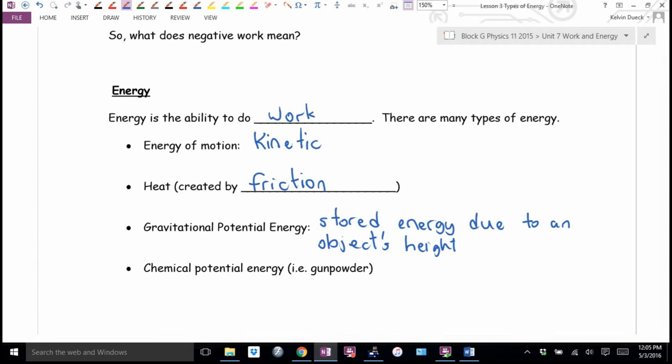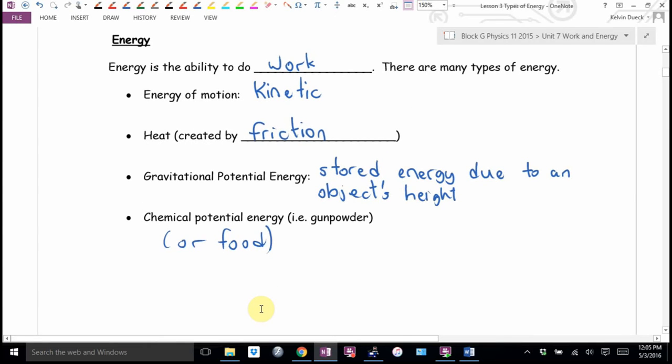This is stored energy due to an object's height. The higher an object is, the more stored potential energy it has, because if you let it go, when it hits the ground, it will exert a force over a distance. There's also chemical potential energy, like gunpowder or food, since you all just had lunch.